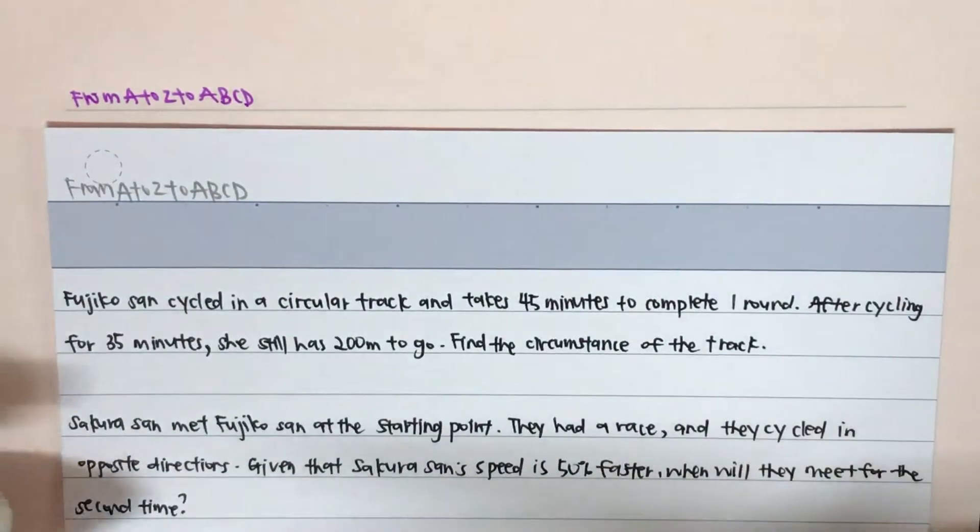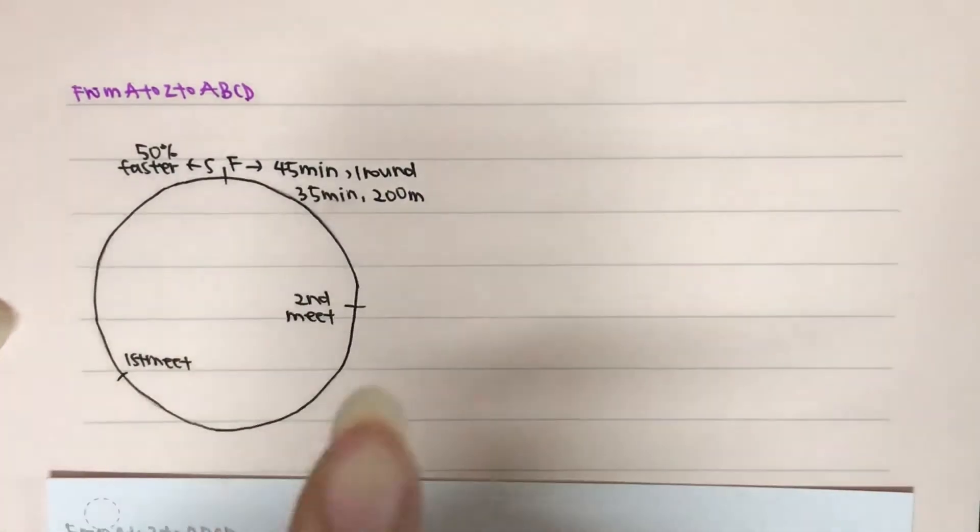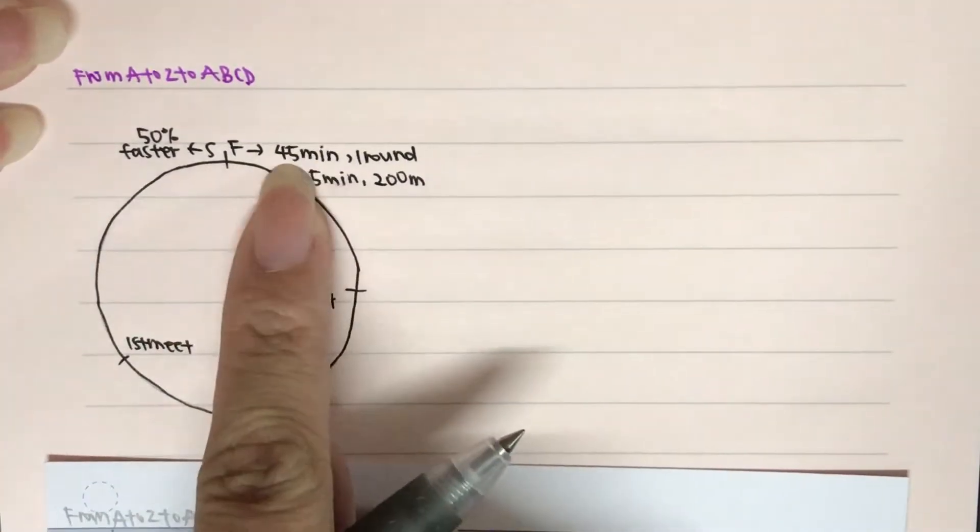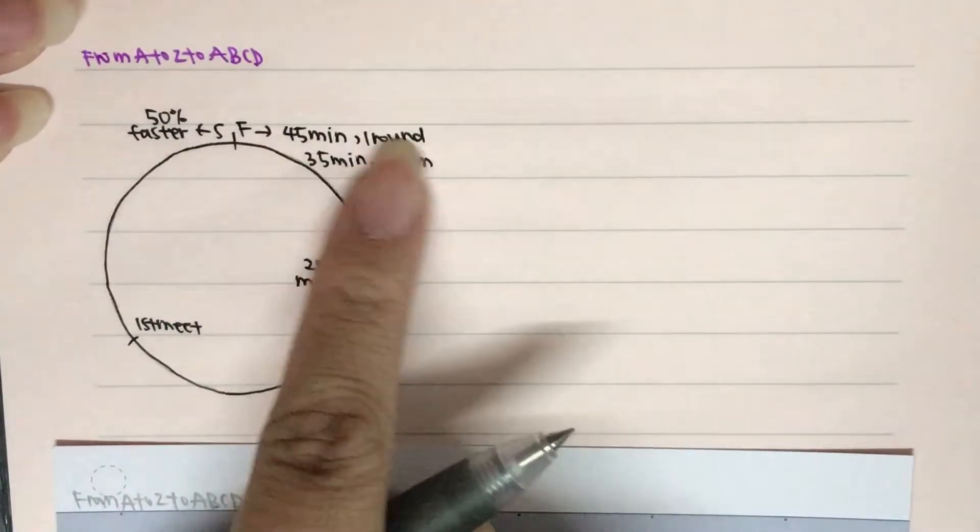So if you use this diagram, first, Fujiko-san, 45 minutes, one round. 35 minutes, 200m left. That's the first part of the question.